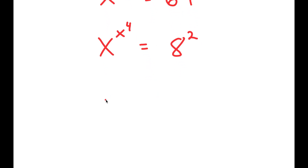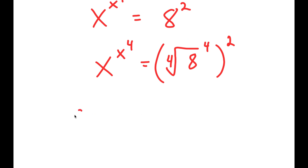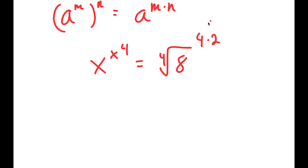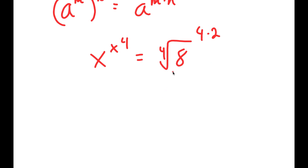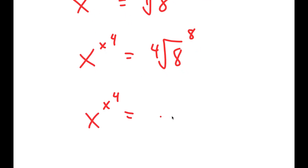Now I'm going to rewrite 8 squared as the 4th root of 8 to the power of 4, squared — because the 4th root of 8 to the power of 4 is just 8, so this is just 8 squared. Using the rule that a to the power of m to the power of n equals a to the power of m times n, this becomes the 4th root of 8 to the power of 4 times 2, which equals the 4th root of 8 to the power of 8.